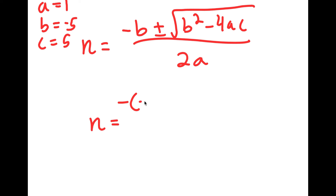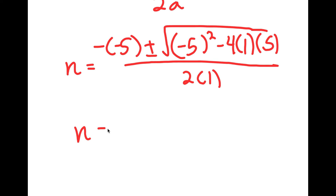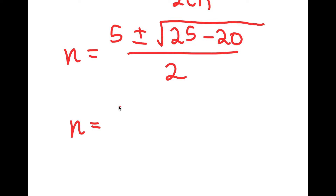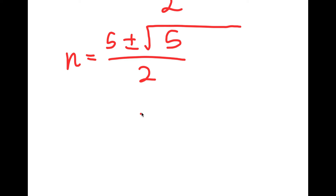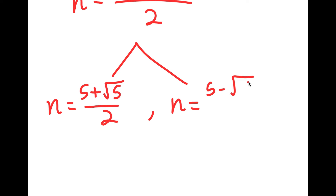So I get n is equal to negative of negative 5, plus or minus the square root of negative 5 squared minus 4 times 1 times 5, all over 2 times 1. This simplifies to positive 5 plus or minus the square root of 25 minus 20, all over 2, which equals 5 plus or minus the square root of 5, over 2. So n equals 5 plus the square root of 5 over 2, and n equals 5 minus the square root of 5 over 2.